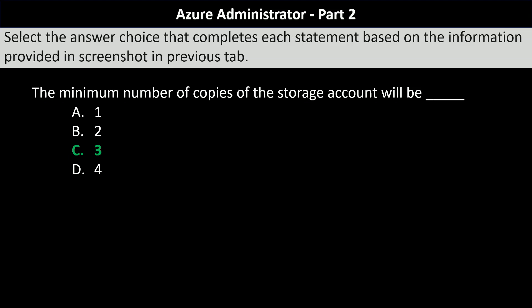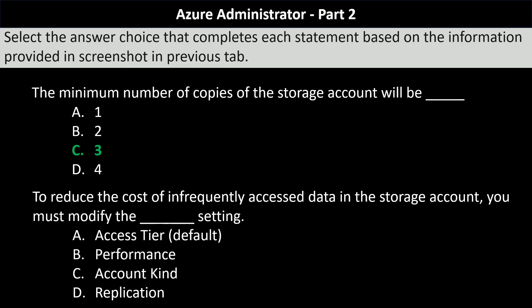The next part of the question: to reduce the cost of infrequently accessed data in the storage account, you must modify which setting? Your options are access tier default, performance, account kind, or replication. The correct answer here would be access tier, as it has the cool option to store infrequently accessed data.